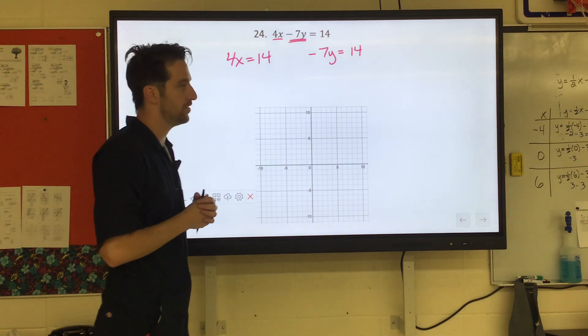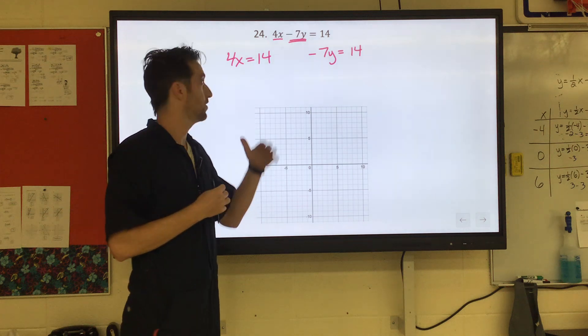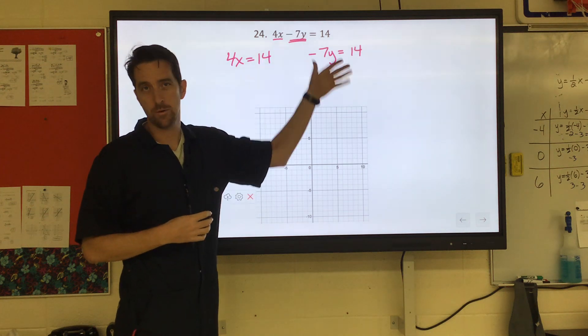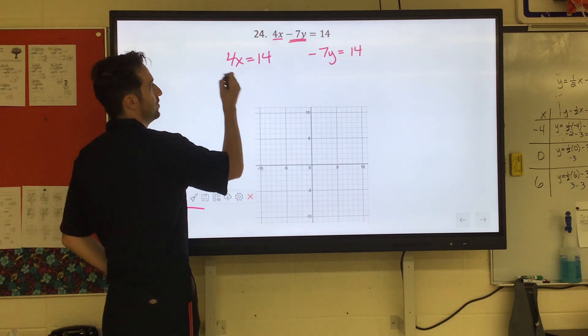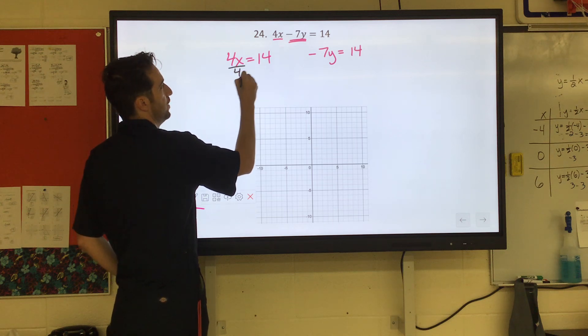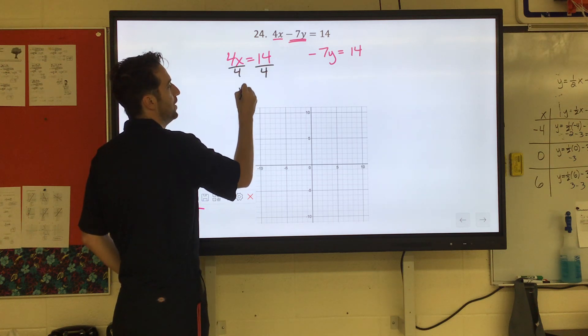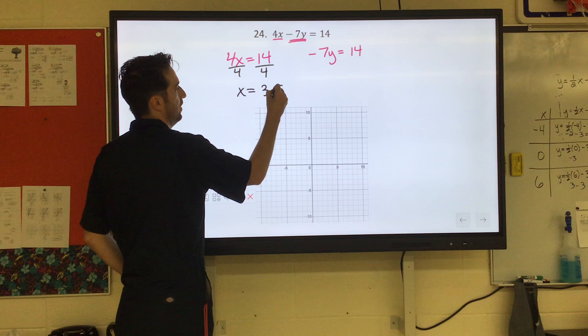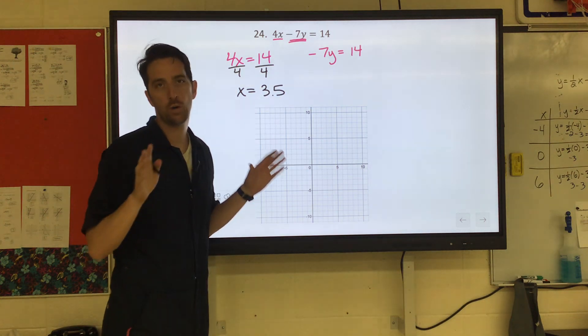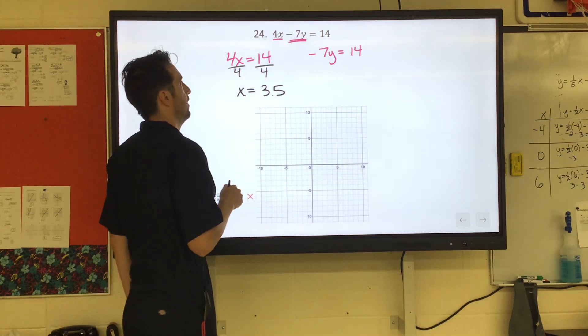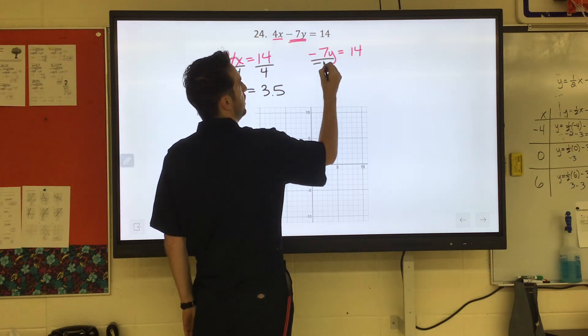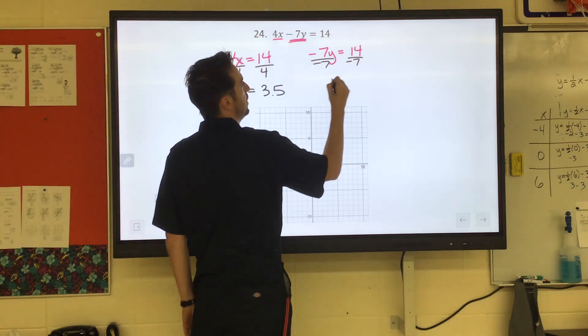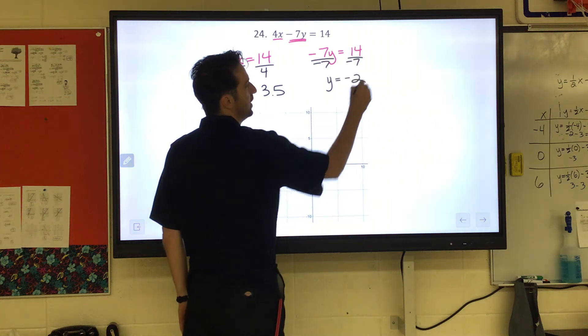We're going to solve each of these equations separately, and it'll give us the x-intercept and the y-intercept. So for the x, it's 4 times x, so we're going to divide by 4 on both sides and we get a decimal. And that's okay, we get x equals 3.5. We'll come back to that. Over here, we're going to divide by negative 7. 14 divided by negative 7 just comes out to negative 2.